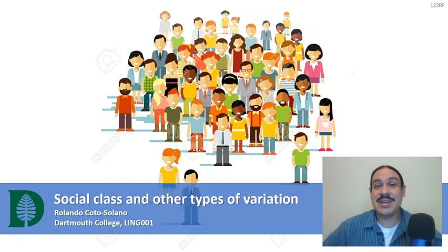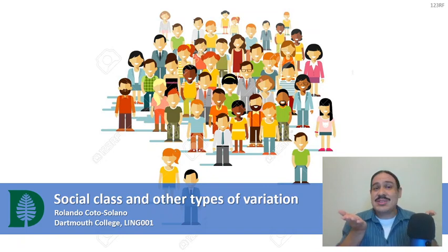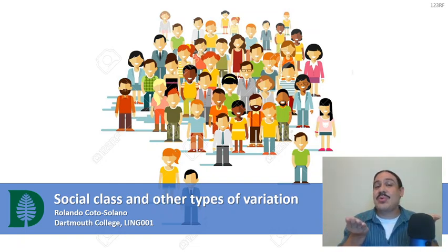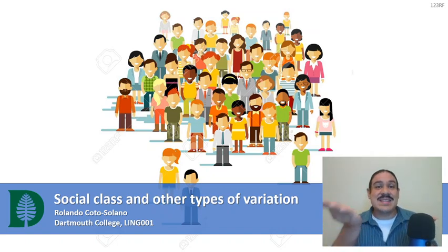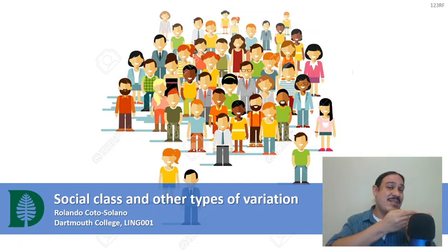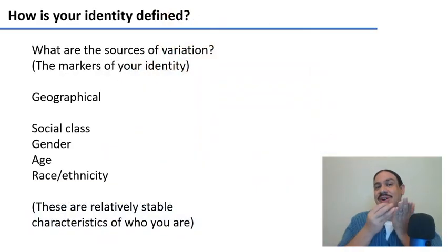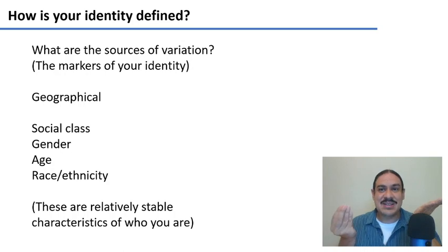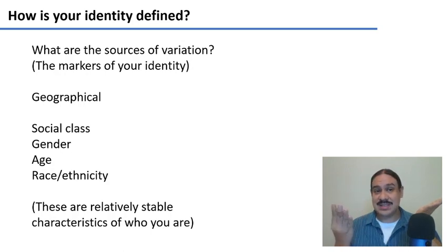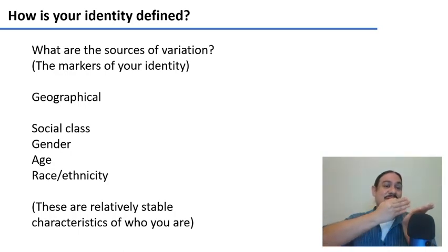We are studying sources of linguistic variation, and we are connecting it to the question of what identifies you — what characteristics make you, you? One answer is that you are who you are because you grew up somewhere. Your geographical origin is part of your identity and influences variation in your language. In this video, we'll look at other sources of variation — social class, gender, age, and race — as markers of identity and factors that influence your linguistic choices.